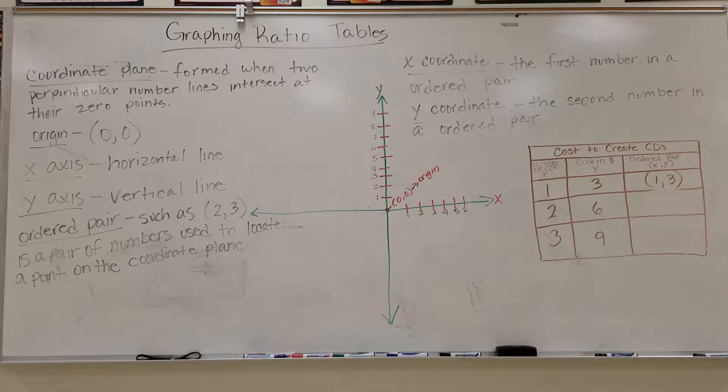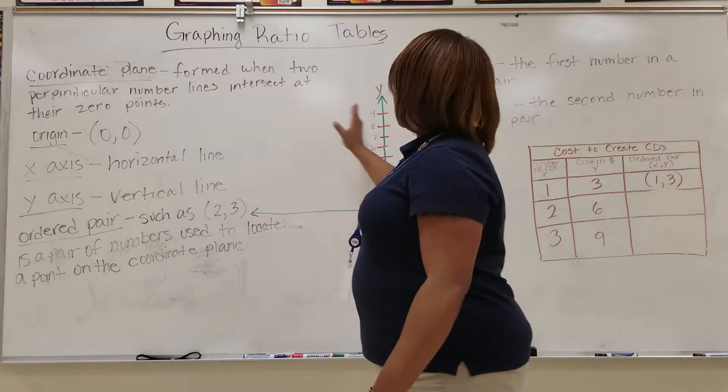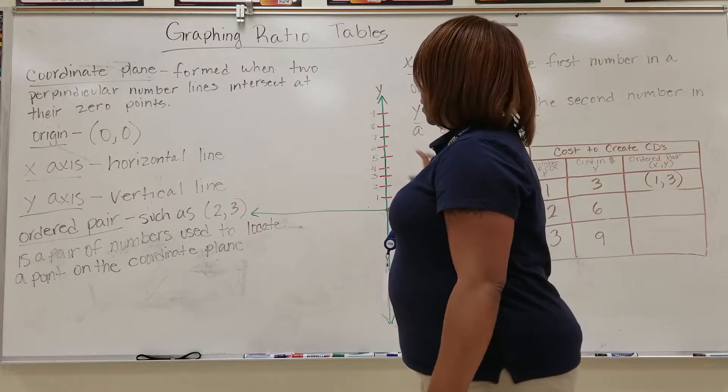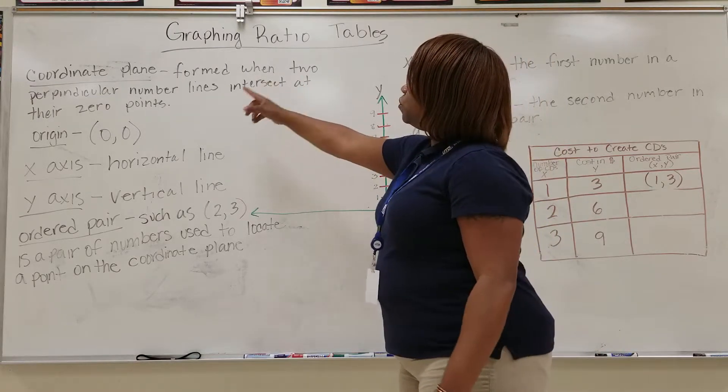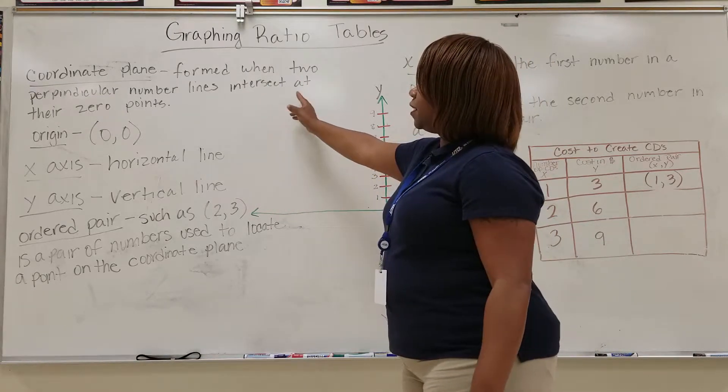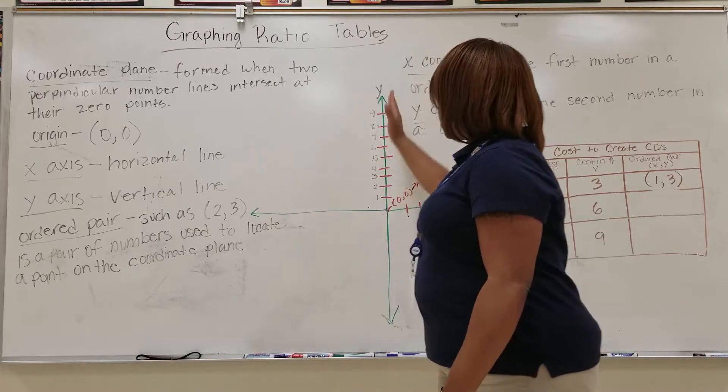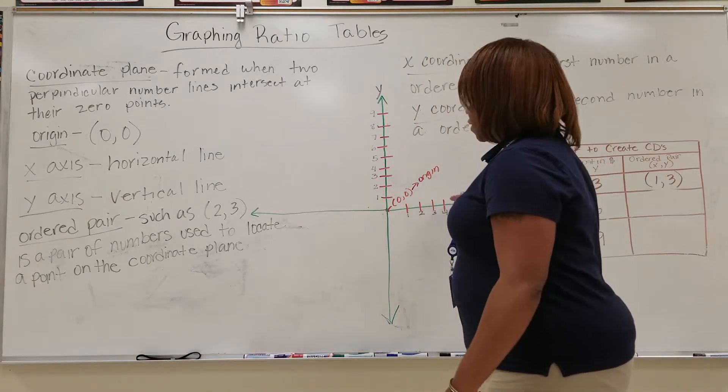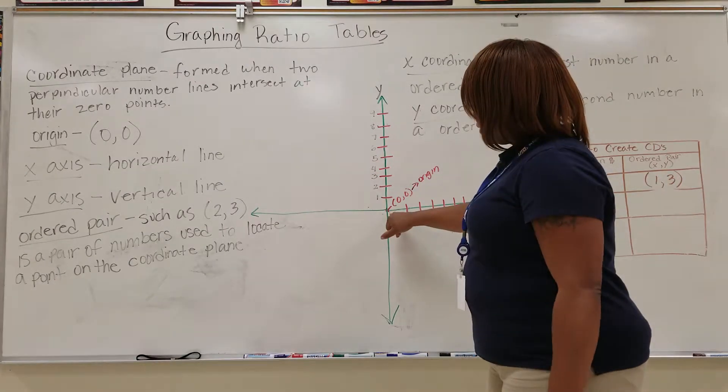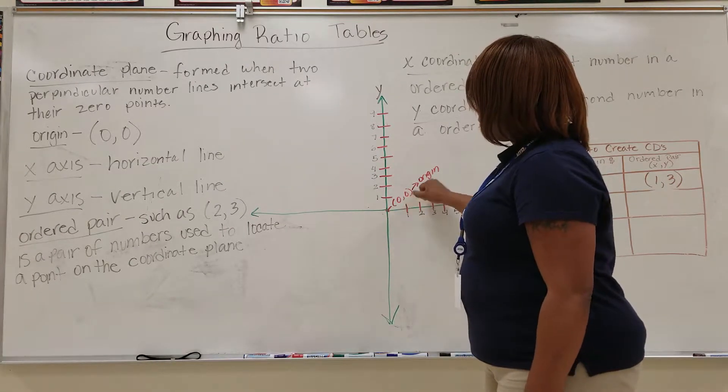Okay, here we have the coordinate plane. This is the coordinate plane. It is formed when two perpendicular number lines intersect at their zero points. Two perpendicular lines, that means lines that intersect, and they intersect here at the origin, which is (0, 0).